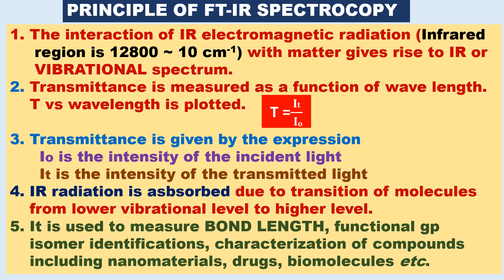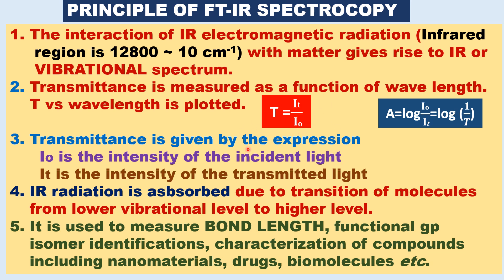In IR spectroscopy, transmittance is measured as a function of wavelength — that is, by varying the wavelength, the transmittance is measured. In the IR spectrum, transmittance versus wavelength is plotted. Transmittance is given by T = IT divided by I0, where IT is the intensity of the transmitted light and I0 is the intensity of the incident beam.